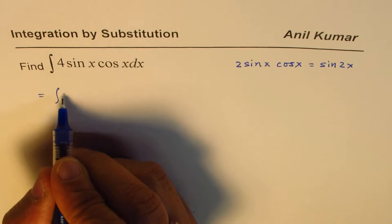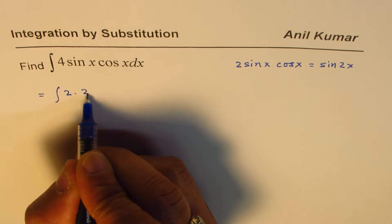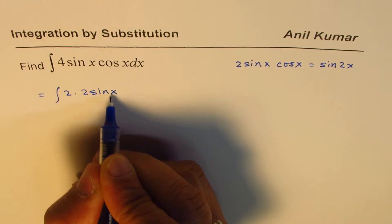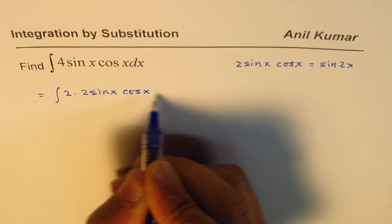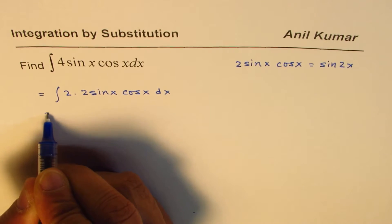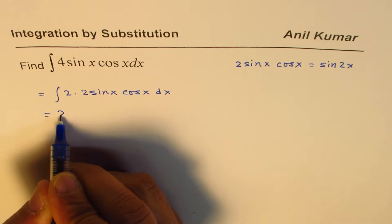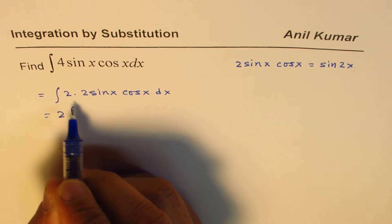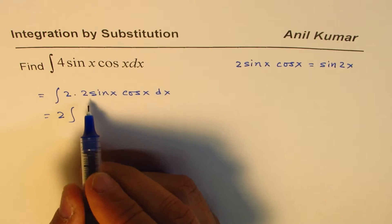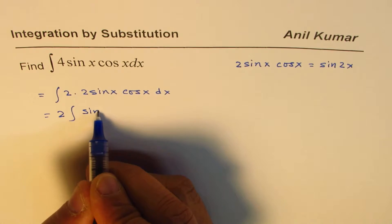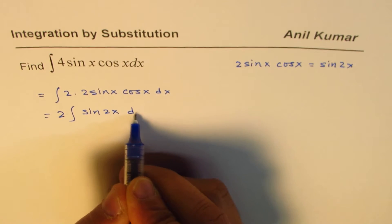So I can always write this as 2 times 2sin(x)cos(x)dx, right? Which is—we can take the constant 2 outside the integral using the properties of integration, and this is sin(2x)dx.